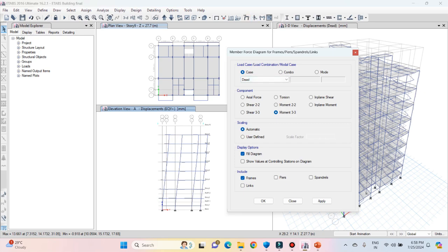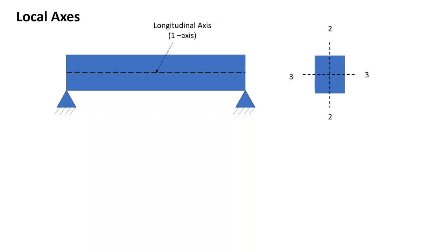Let's understand what moment 33, moment 22, shear 22, and shear 33 mean in ETABS. The longitudinal axis of any member is called the 11 axis. If we cut the cross section of a rectangular beam, the major axis is called the 33 axis and the minor axis is called the 22 axis in ETABS. So moment M33 is the major axis bending moment, M22 is the minor axis bending moment, and similarly we have shear forces about the major and minor axes.